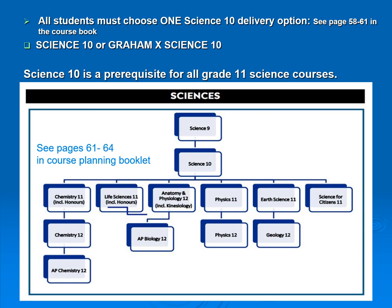All students must choose science. At the grade 10 level, there is one science available unless you're in Grad X Science 10. Science 10 is required for all grade 11 science courses. Grad offers chemistry, life sciences including honours, physics 11, earth science 11, and science for citizens. From there, students can take anatomy and physiology, chemistry, AP chemistry, AP biology, physics 12, or geology 12. Please note there are two pathways into AP biology — if you could read the course catalogue, that will describe that more carefully, and you can also talk to your science teacher about that.